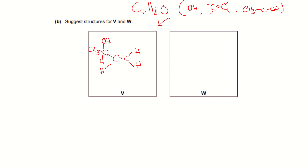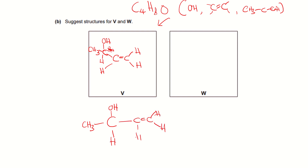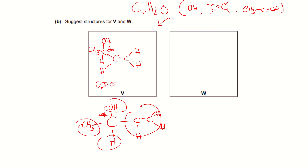Does V show geometrical or optical isomerism? Checking the double bond: two H atoms are attached to the same carbon, so geometrical isomerism is ruled out. But there is a chiral center — the carbon bearing OH, CH3, H, and a vinyl group (C=C with H) — that's four different groups. So V shows optical isomerism.